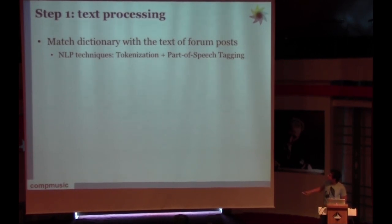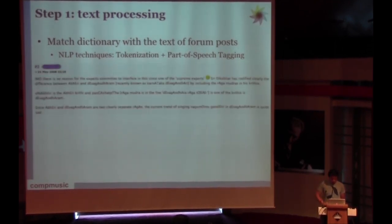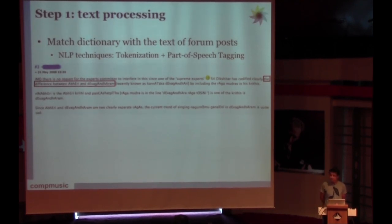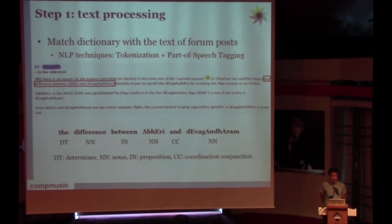One way to do it is by tokenizing the text and performing some part-of-speech tagging techniques. For example, this is a forum post. Let's take this sentence: the difference between Abheri and Devagandhari. A part-of-speech tagging technique analyzes it syntactically and says that those are nouns, this is a coordination conjunction, a preposition, and a determiner.